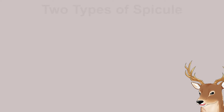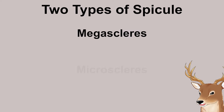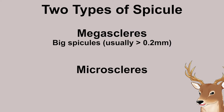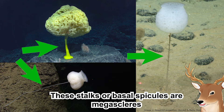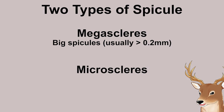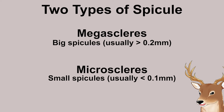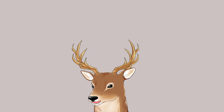Some have fused spicules called dictyonine, while others have loose spicules called lysacine. There are generally two types of spicules: the megascleres and microscleres. Megascleres are big spicules, usually bigger than 0.2 millimeters in diameter. Some of them are relatively really big, projected and visible outside their body — like the stalk that anchors to the substrate. Microscleres are the smallest spicules, usually less than 0.1 millimeters in diameter. Like other sponges, these spicules are the basis of their classification, which is why for identification you need to observe their spicules.